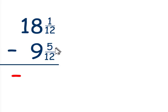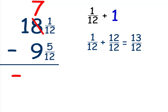In this case, 1 is less than 5. This means we're going to have to borrow from the whole. So we're going to borrow from 18. The 18 is going to become 17. And we're going to add 1 to 1 12th. When we add 1 to 1 12th, remember 1 can be written as 12 over 12 because 12 12ths is equal to a whole.